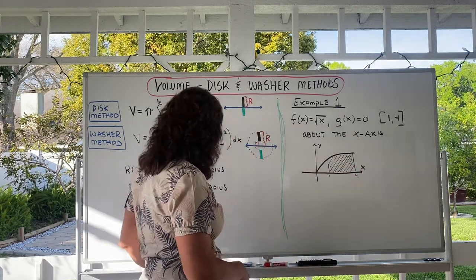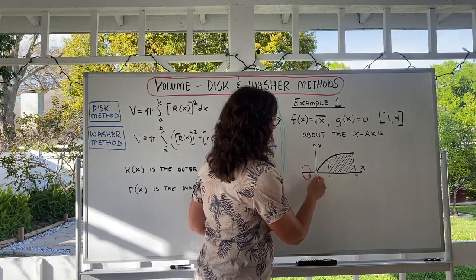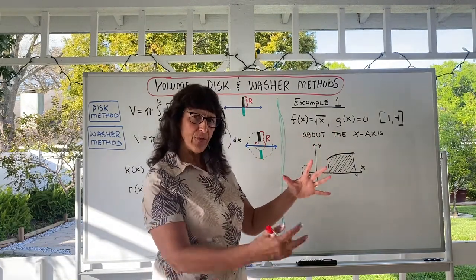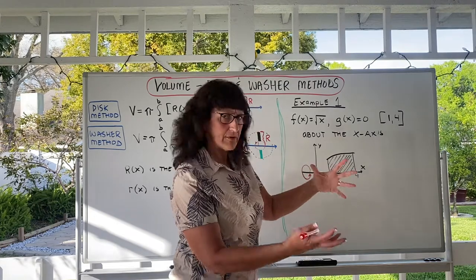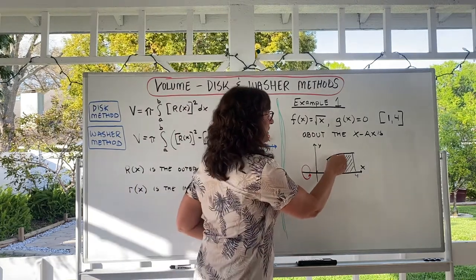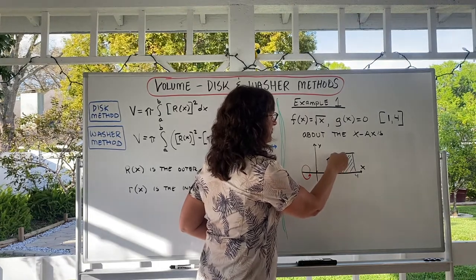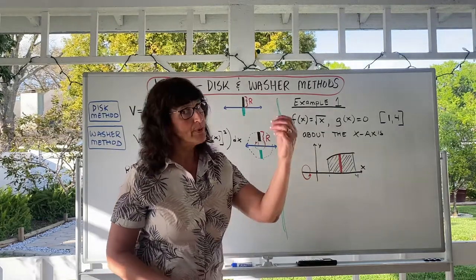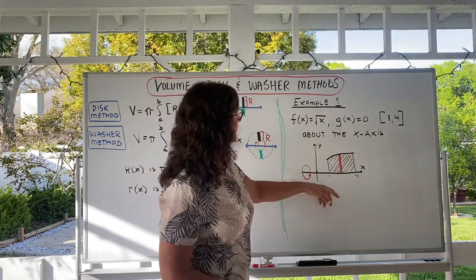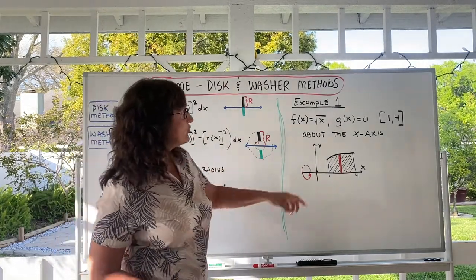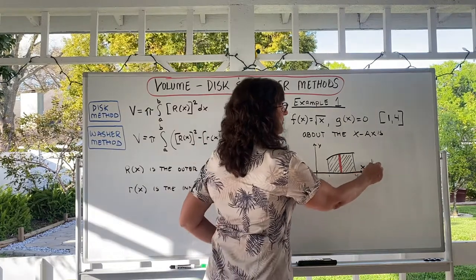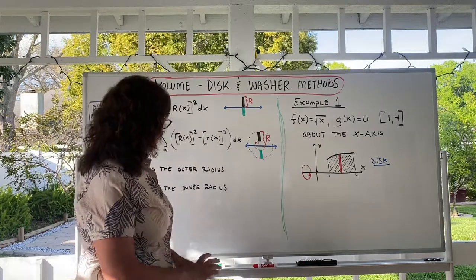We want to revolve this region about the x-axis. Picture taking this and revolving around the x-axis — can you picture the three-dimensional shape? Maybe it's going to be the shape of a solid bowl. We want to find the volume of the solid generated. Inside the shaded region, draw a representative rectangle, always perpendicular to your horizontal axis of revolution. Picture the rectangle revolving around the axis. If the representative rectangle is sitting on the axis of revolution, it's going to be a disk method. Because this rectangle is sitting on the axis, we're going to use disk method here.